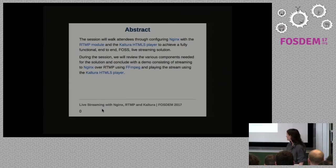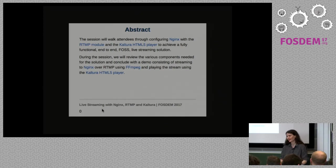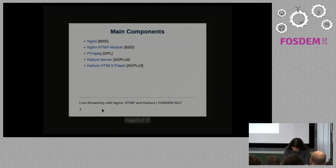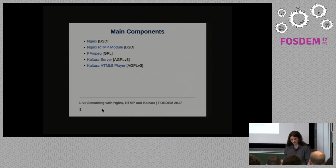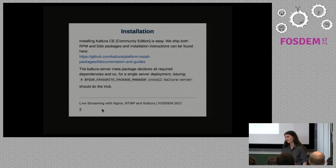The components we'll be using are Nginx, the RTMP module for it, Kaltura's HTML5 player — which Zohar also mentioned in his previous session — and our Kaltura server. Everything's open source: Nginx is BSD, the RTMP module as well. We're AGPL, and FFmpeg is GPL. The installation is quite easy — we provide both RPMs and DEBs which run on RHEL, CentOS, Debian, and Ubuntu. We support various PHP versions starting from 5.3 up to 7.